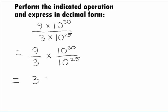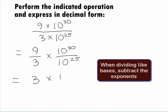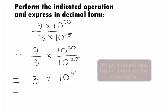When we divide 9 by 3, we get 3, and subtracting our exponents together on 10, we get 10 to the 5th power.